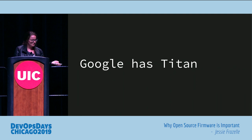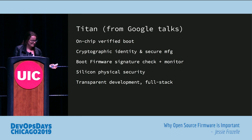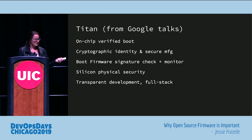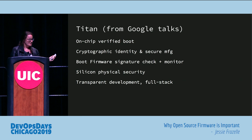Google has Titan — custom silicon they wrote. They've given a lot of talks on it. It has on-chip verified boot, cryptographic identity, secure boot firmware signature check and monitor, silicon physical security, and transparent development. There's a great paper on this.